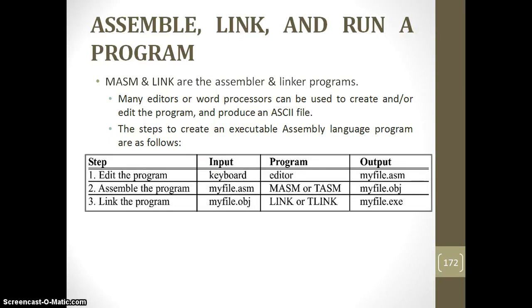Hello friends, today we look at the execution steps of a simple assembly program. Before going into execution steps, we need to be aware of the file formats. Three types of file formats: one is the assembly file with the extension .asm. After that, we use MASM as the assembler, which will convert your assembly program into a binary or object program with the file extension .obj.